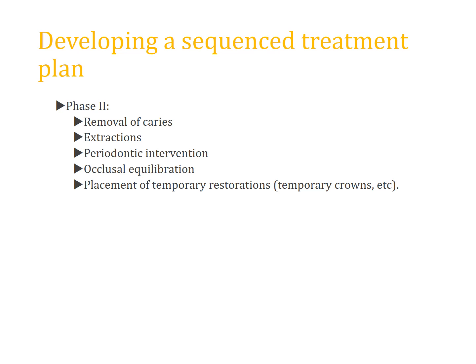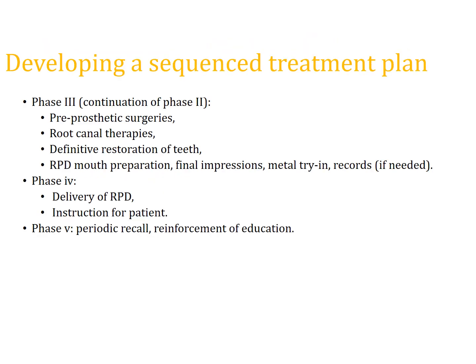Phase 3 involves pre-prosthetic surgeries and definitive treatment, including crowns and bridges for abutment teeth, and mouth preparation for the cast partial denture. Phase 4 is the finalization and delivery of the RPD. Phase 5 is the recall plan and maintenance and support. This completes the overview of treatment planning for removable partial dentures.